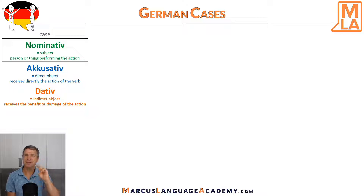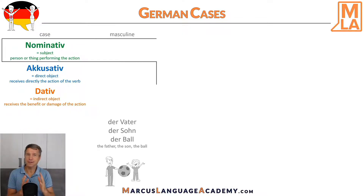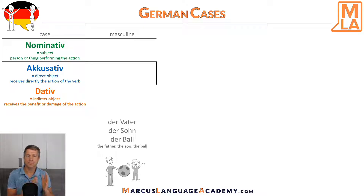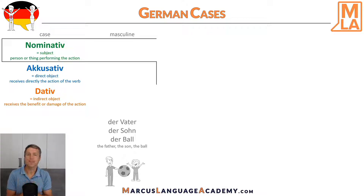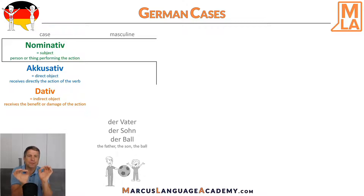In German we have three different genders. The masculine article is 'der'. For example: der Vater, der Sohn, and der Ball. Now what happens when we make a sentence out of these three nouns?